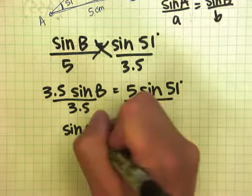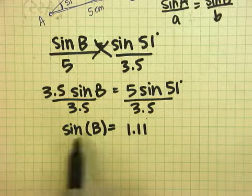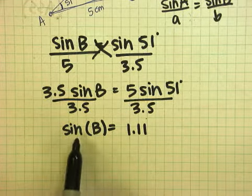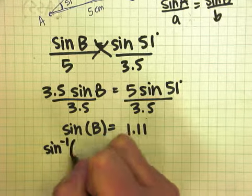And now I can't just divide both sides by B because this is a function. It's not sine times B, it's sine of B. And the opposite of a function is its inverse. So I would take the inverse function of both sides.